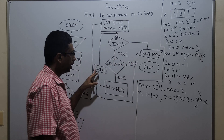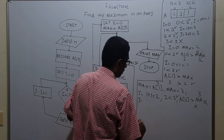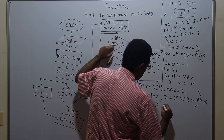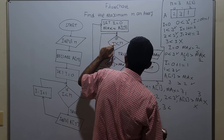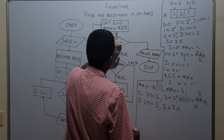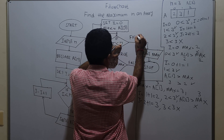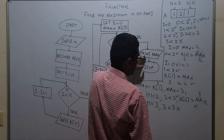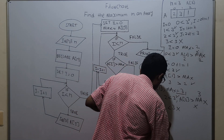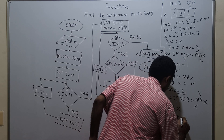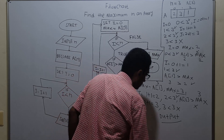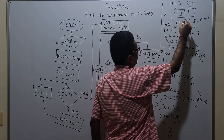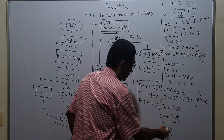We take the false path, incrementing i by 1: i equals 2 plus 1 which is 3. We compare i less than n: 3 less than 3, which is false. So we come out and print max. The value in the variable max is 3. I gave the array values 2, 3, 1 — and the max value 3 is getting printed. This flowchart is working perfectly.